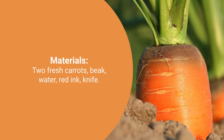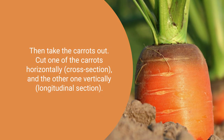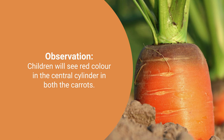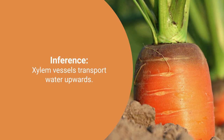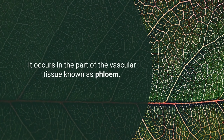To demonstrate xylem function in your class, take two fresh carrots, a beaker, butter, red ink, and a knife. Cut off the lower tips of the carrots, place them into water containing red ink with the lower tips down, and leave the setup for at least two to three hours. Then take the carrots out and cut them horizontally and vertically — students will see that the red color is present in the central cylinder of the carrot root. This means the central tissue transports water upwards — that is the xylem.